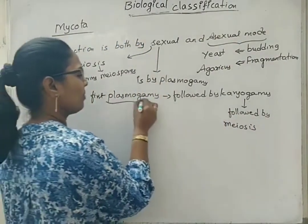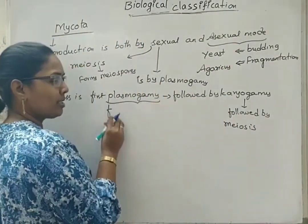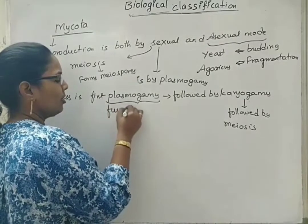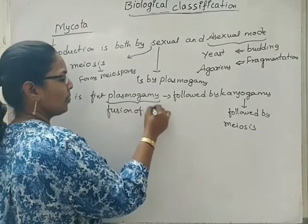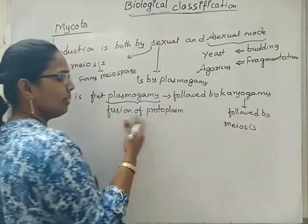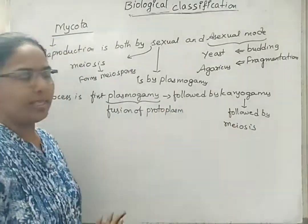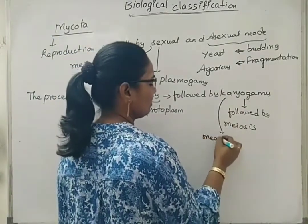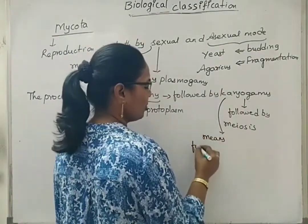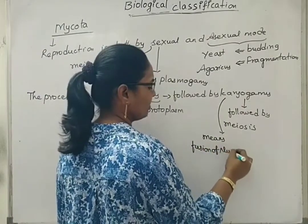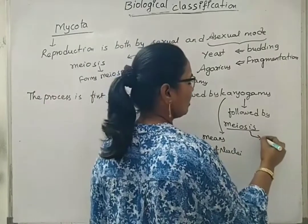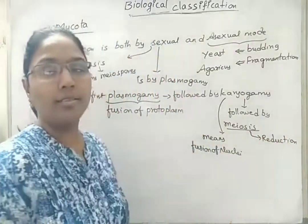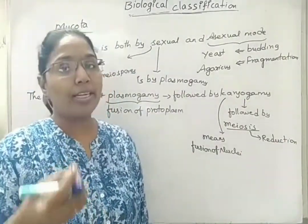What is meant by plasmogamy? It is the fusion of protoplasm of the chambers or one hyphae or a part of hyphae — fusion of protoplasm, meaning the nucleoplasm plus cytoplasm content, the life content of the hyphae. Karyogamy means fusion of nuclei. Meiosis means reduction division, in which the diploid cell will undergo meiotic division to give haploid gametes.